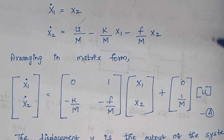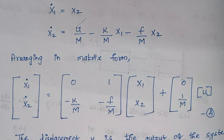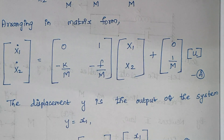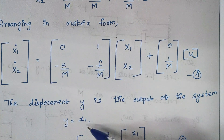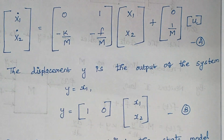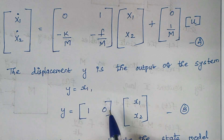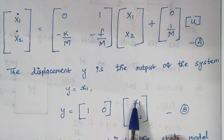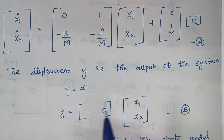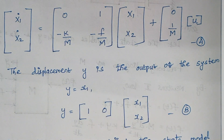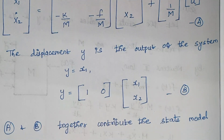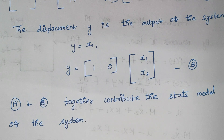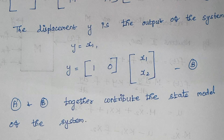We have arranged the expression in matrix form. Next we proceed with the output. The displacement y is taken as the output, and since y = x1, we frame the output expression accordingly. The coefficient of x1 is 1 and there is no x2, so it is 0: y = [1, 0]·[x1, x2]ᵀ, giving y = x1. Name this as matrix B. A and B together constitute the state model of the system. If you have any doubt, let me know in the comment section. Thank you.